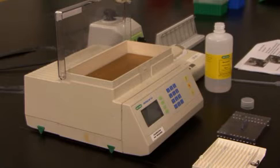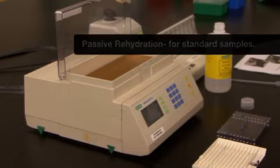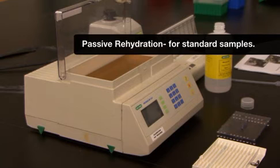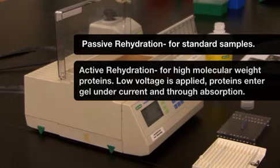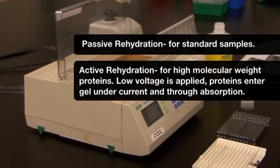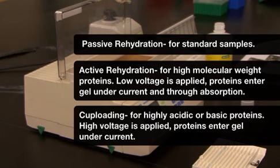The initial step of the first dimension separation is to rehydrate the strip. I will do passive rehydration in the focusing tray. Other forms of rehydration are active, which may be used for high molecular weight proteins, and cup loading, which is ideal for the separation of proteins that will be separated at extreme basic and acidic pH.